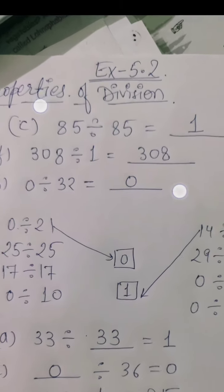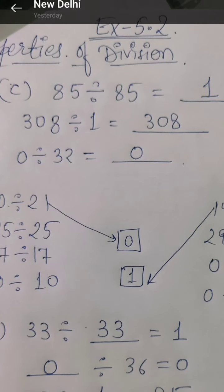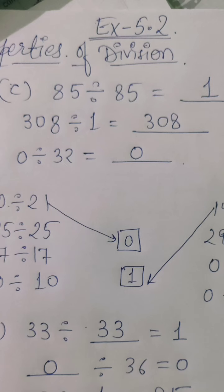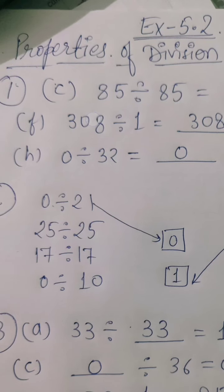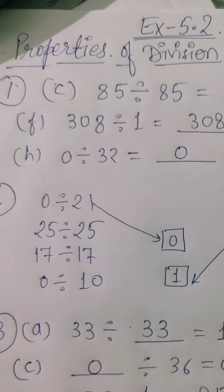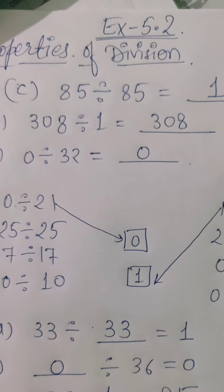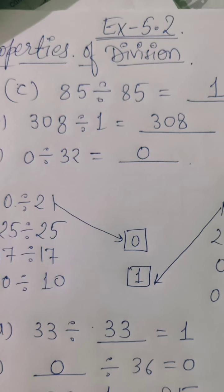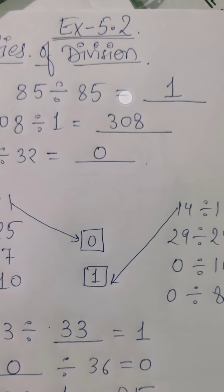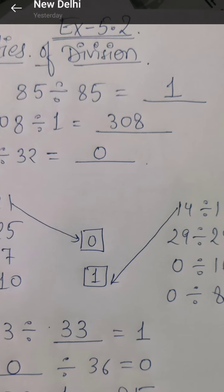So, the first property is that, when we divide the number from that number. Here, I am solving only C, F and H part. Other parts, you will do by yourself. If we divide 85 by 85, if we divide the same number, then we always get 1. This is always happening.